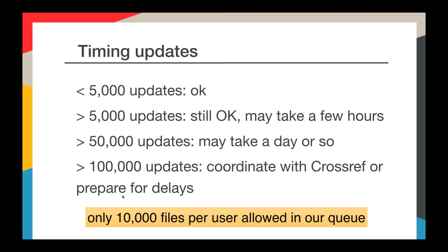If you decide to do a big update to your metadata, there are some things you need to keep in mind. Sending us a large amount of files is usually okay, depending on your definition of large. If you're sending us thousands of updates, you may want to coordinate with us. We only allow 10,000 files per user in our submission queue, so if you have more than 10,000 files to send, you'll need to send them in batches. If you're sending in 100,000 or more, you should contact us so that we know what to expect. If you have a tight deadline, you will need to contact us and coordinate so we can prepare.